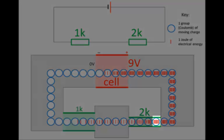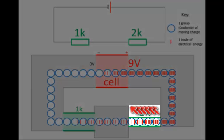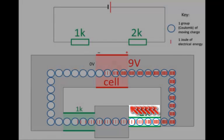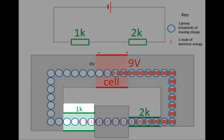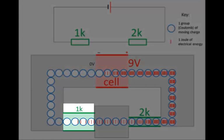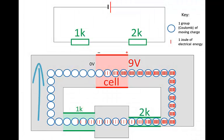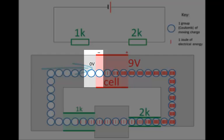That's because a good conductor cannot remove energy or voltage from the moving charge. But as these charges move through the 2K resistor, the voltage drops from 9 volts, where the charges enter the resistor, to 3 volts where they leave — meaning 6 volts has been lost, changed into heat energy. Then the charges move through the good conductor between the two resistors and the voltage stays 3 volts. But as charges move through the 1K resistor, all remaining voltage is lost so they return to the negative terminal with 0 volts.